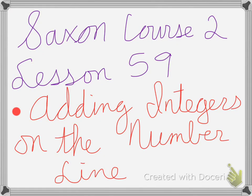All right, Saxon Course 2, Lesson 59 is on adding integers on the number line.